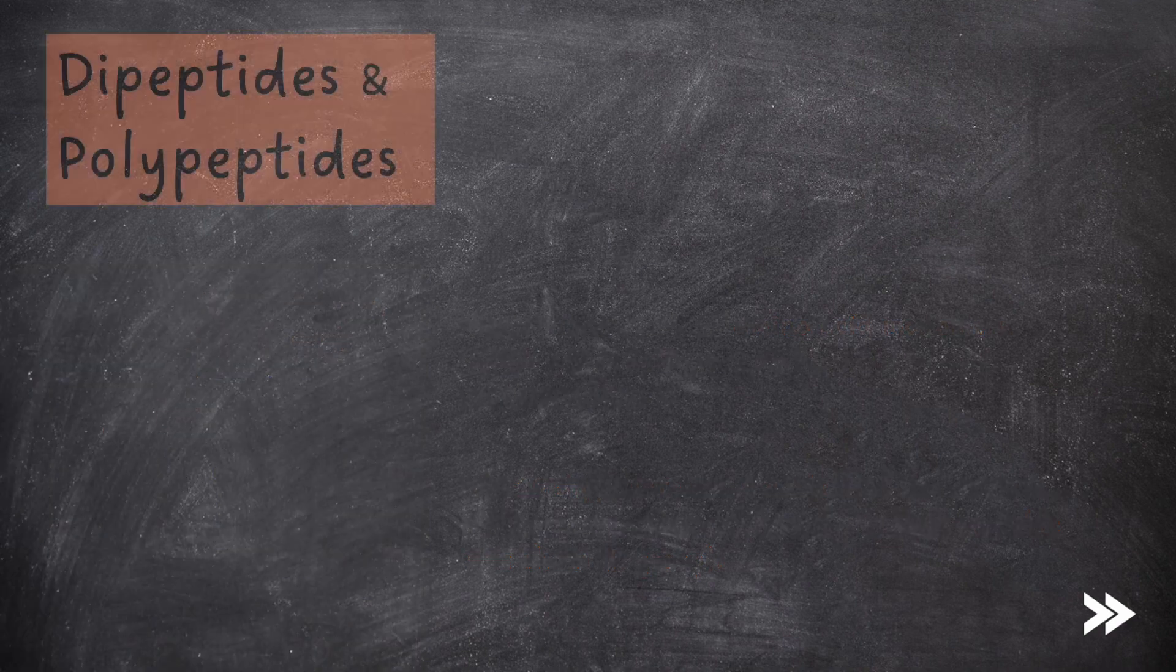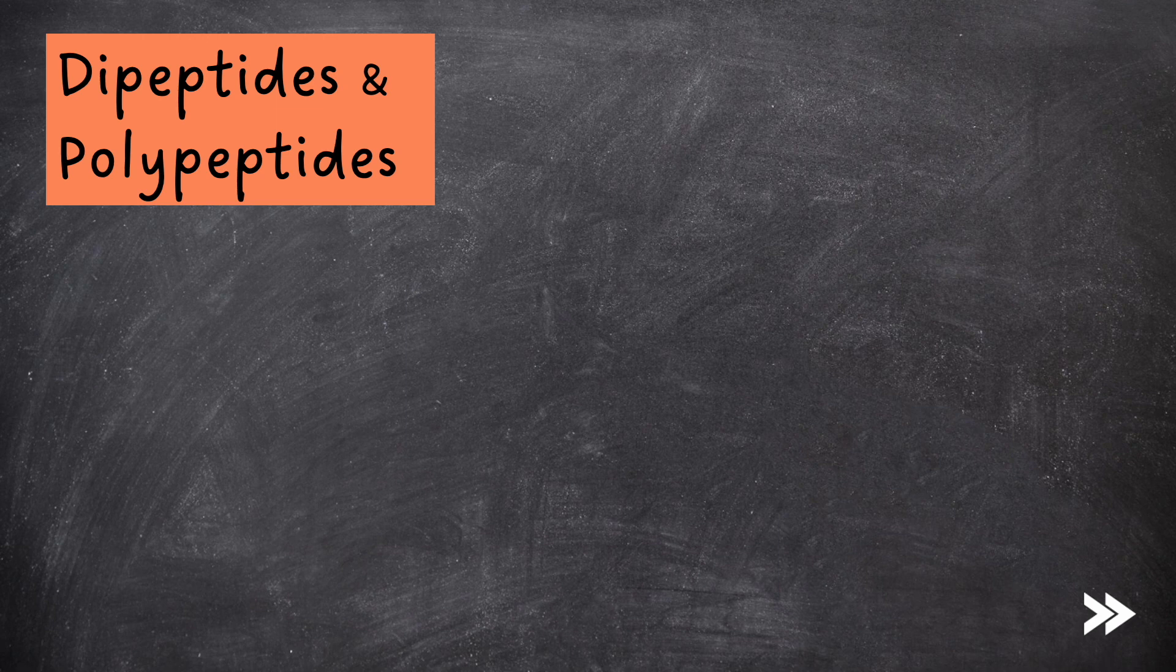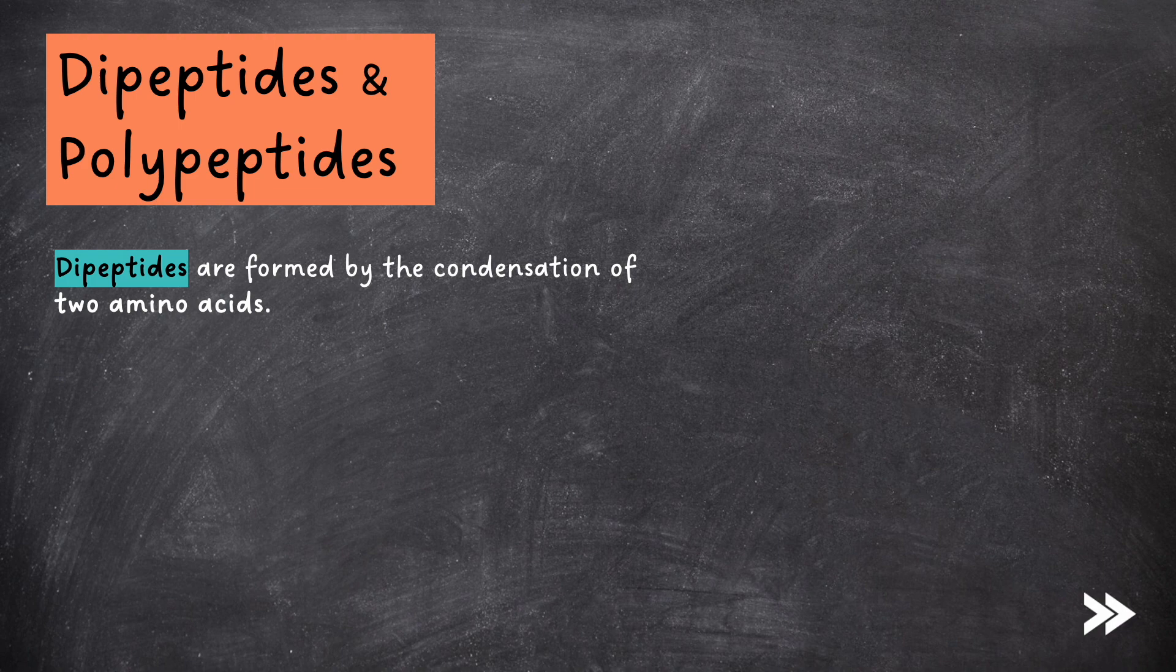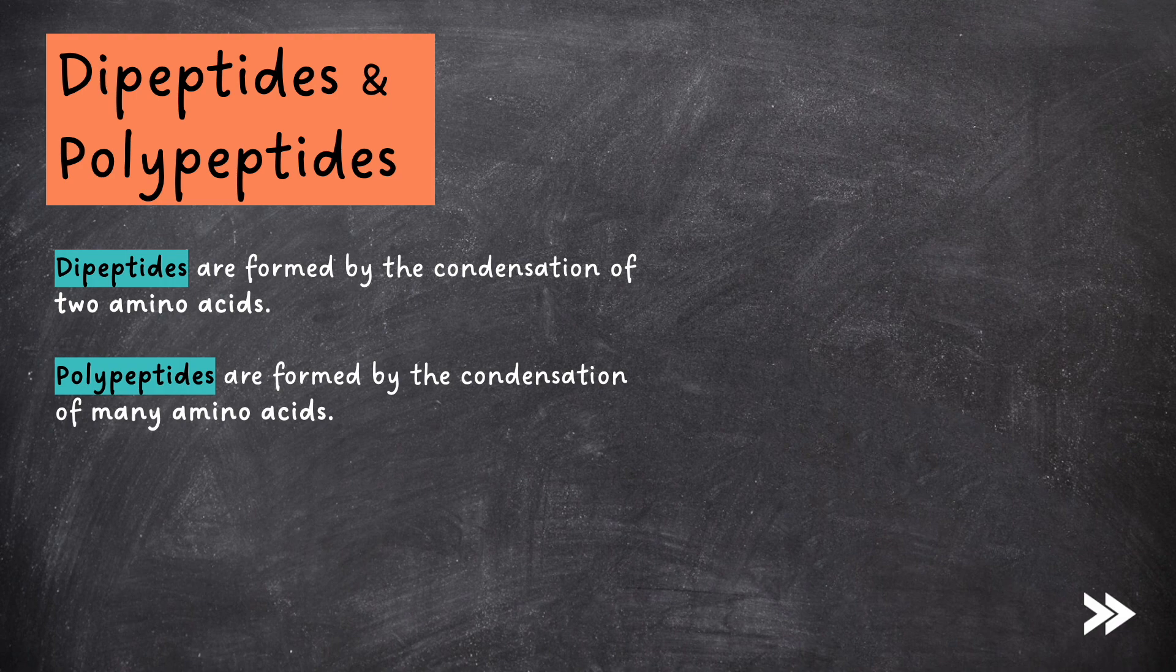Next, we need to know about the formation of dipeptides and polypeptides. Dipeptides are formed by the condensation of two amino acids, whilst polypeptides, poly meaning many, are formed by the condensation of many amino acids.